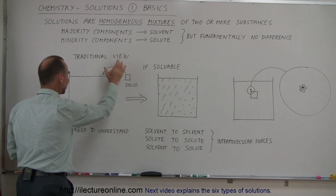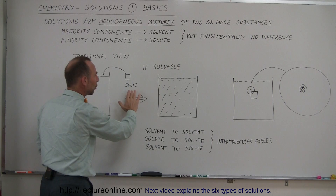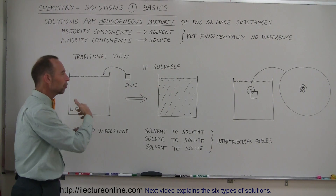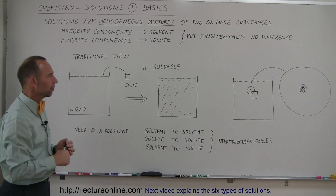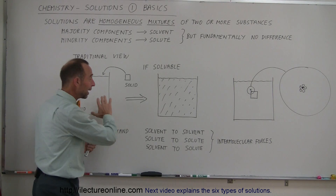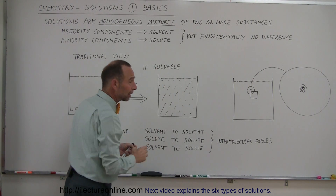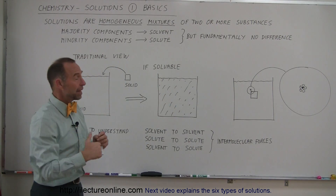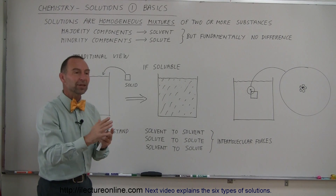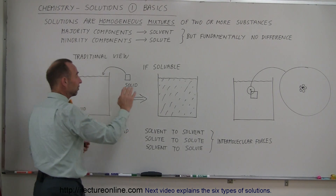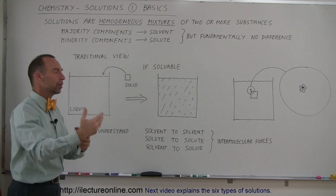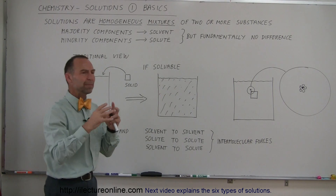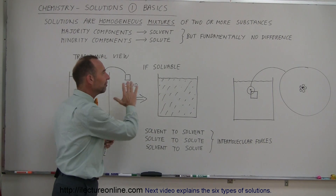If you take a solid and put it into a liquid, the solid will, if soluble, dissolve. If something dissolves in another substance, it's called soluble. Sometimes when you put a solute in a solvent, you don't see any physical change — you may have a colorless liquid that remains colorless after dissolving the solid. Other times you will see a change: a color change, cloudiness, things like that.